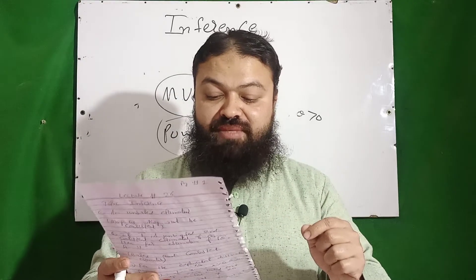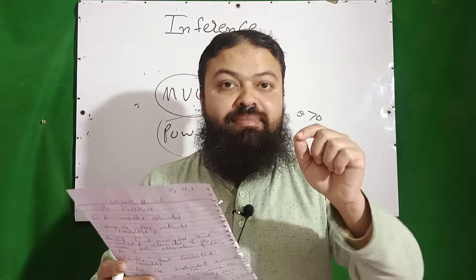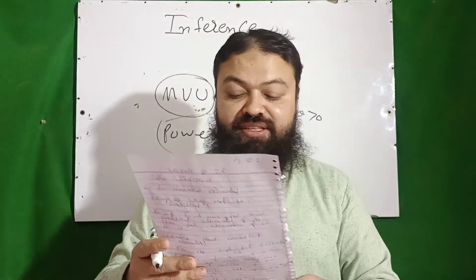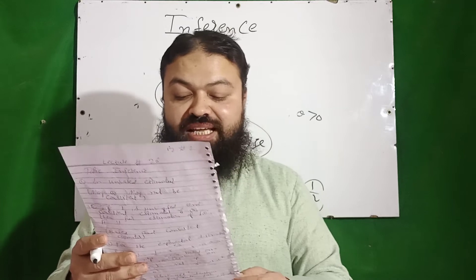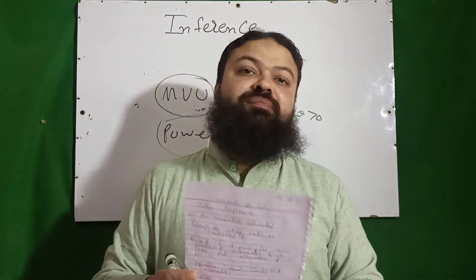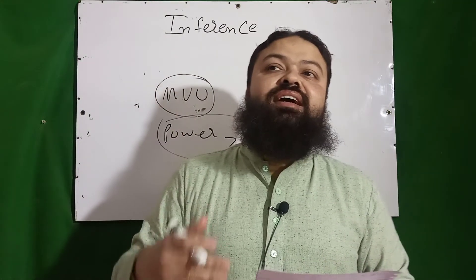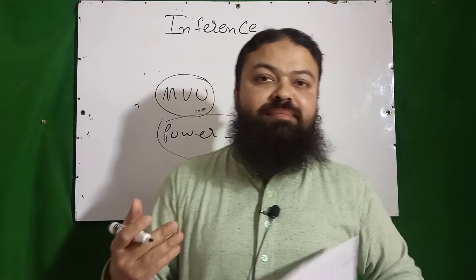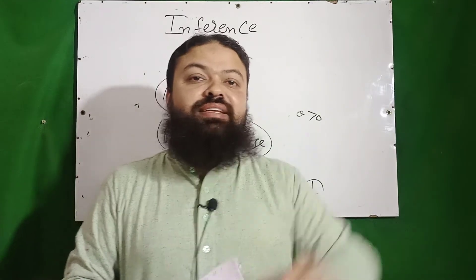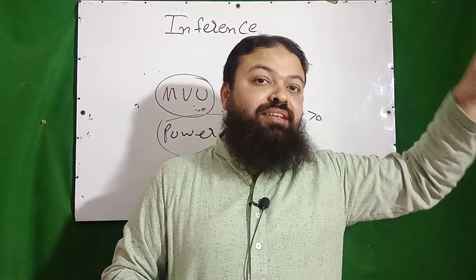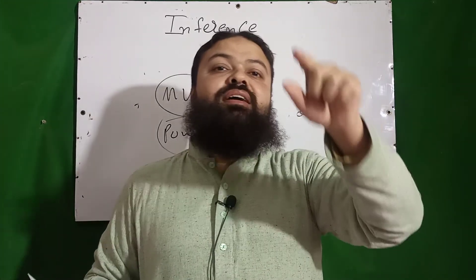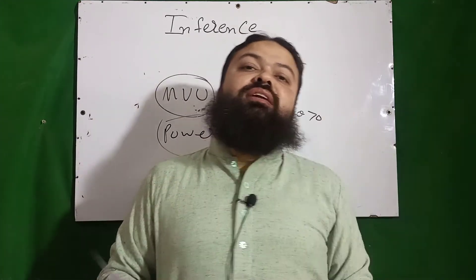Number nine: the factorization theorem for sufficiency is known as the Fisher-Neyman theorem. Number ten: the Cramér-Rao inequality, with regard to the variance of an estimator, provides the lower bound on the variance. If an unbiased estimator is efficient with minimum variance, the lowest boundary of that variance is given by the Cramér-Rao inequality.